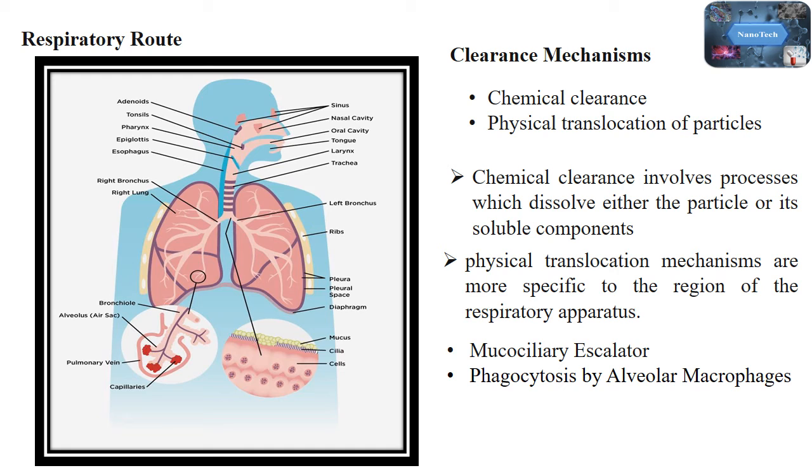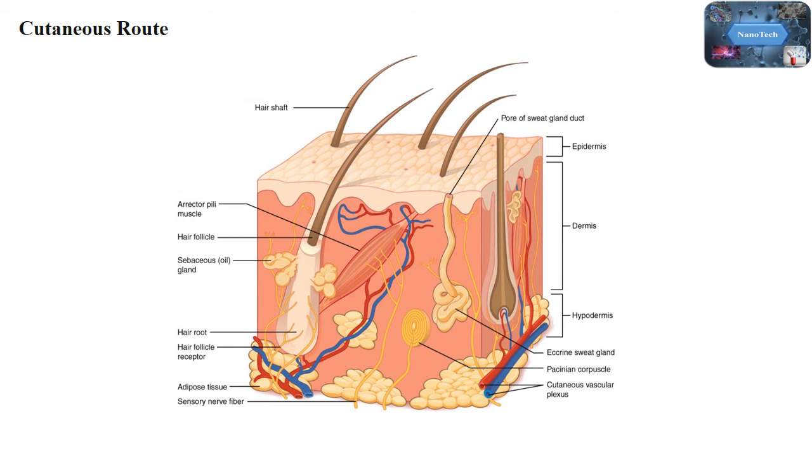Next is the cutaneous route, that is skin, which protects against all forms of environmental aggression and hence potentially against nanoparticles also. The skin has three major layers: epidermis, dermis, and hypodermis.